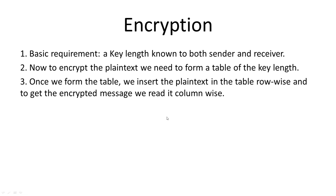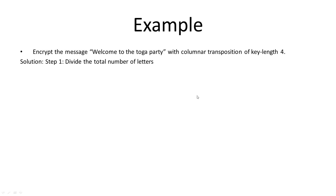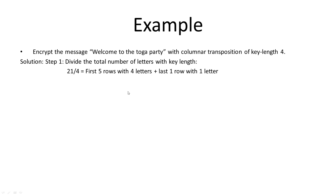Let's look at an example. Let's say we have the message 'welcome to the toga party' and we have to encrypt it with key length four. Step one: divide the total number of letters by the key length. Counting the letters: there are 21 total. We divide 21 by the key length of four.